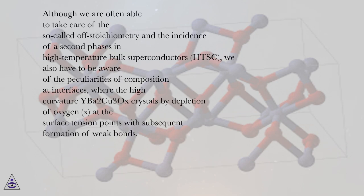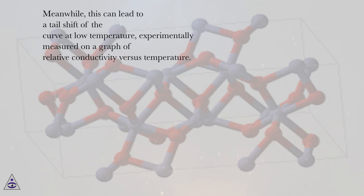X at the surface tension points with subsequent formation of weak bonds. Meanwhile, this can lead to a tail shift of the curve at low temperature, experimentally measured on a graph of relative conductivity versus temperature.